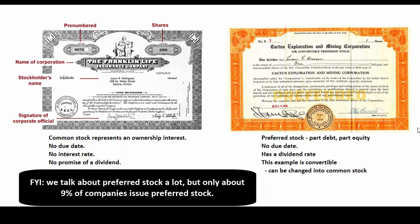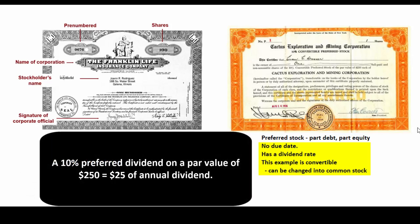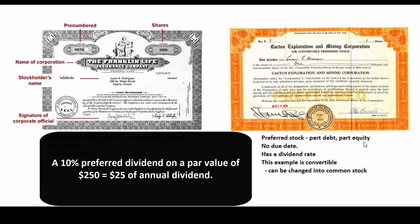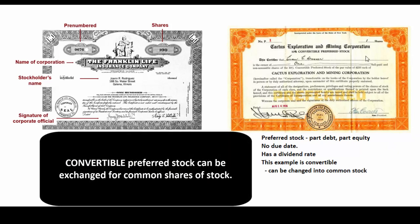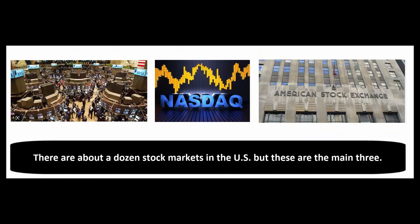Then there's preferred stock, which is part equity and part debt. It doesn't have a due date but it does have a dividend rate — for example, a 10% preferred stock on a $250 par value means the company will do its best to pay $25 every year. This example happens to be convertible preferred, meaning the holder can convert it into a certain number of common shares at some point in the future.